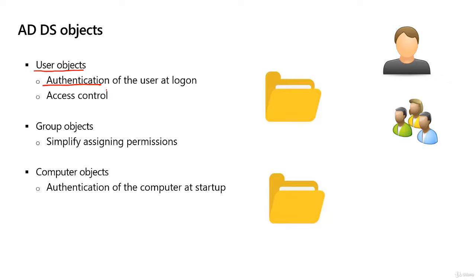The other purpose is access control. I want Bob to have certain access to data and applications. When I say data, I mean like shared folders. Permissions can be assigned that control what Bob has access to.